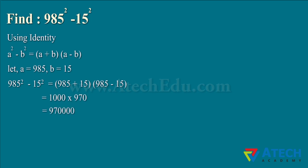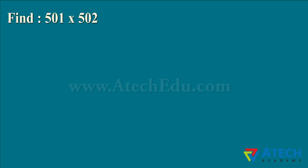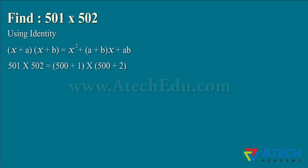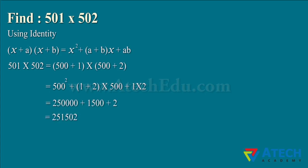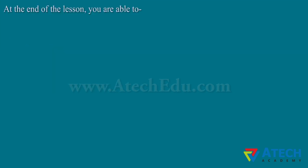Find 501 multiplied by 502. We will use the standard identity (X + A) multiplied by (X + B) equals X² + X(A + B) + AB. Here, X equals 500, A equals 1, and B equals 2. Upon applying these values and solving, we get the result as shown.